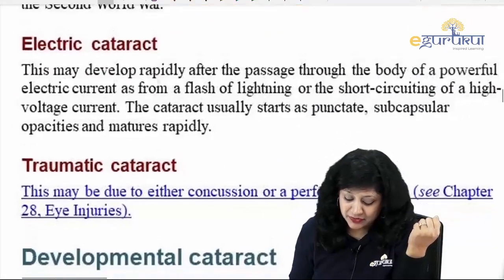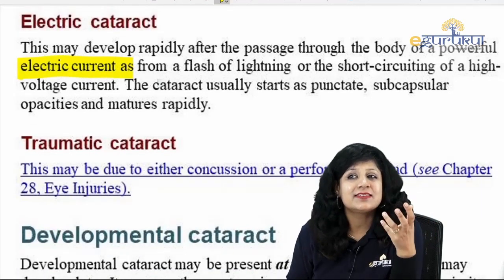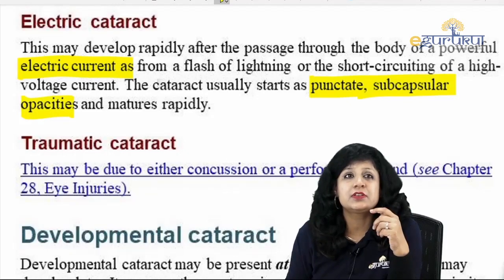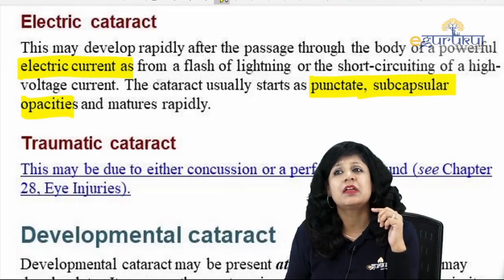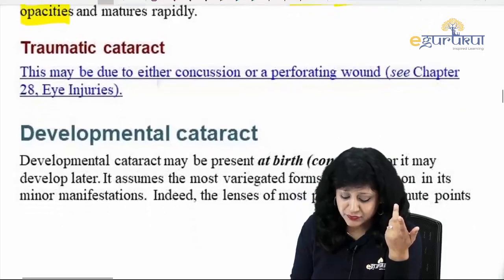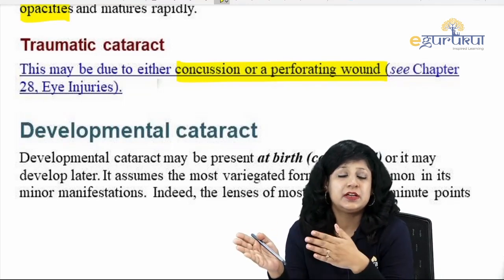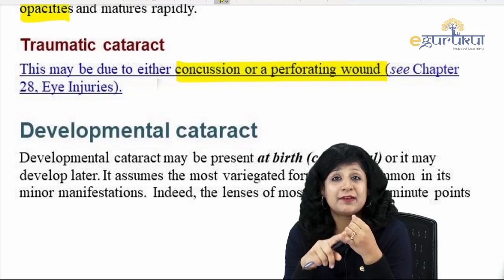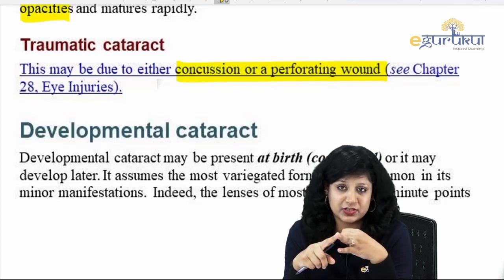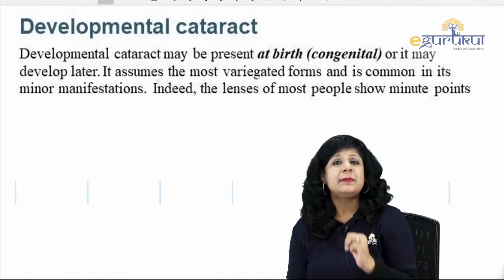Electric cataract may develop rapidly after passage of an electric current — it is mostly the punctate subcapsular type. Even a strong electric current can lead to cataract. Then we have traumatic cataract — it can be blunt trauma, perforating trauma, or penetrating trauma, all causing cataract. Questions for the comment section: what is the name of the cataract caused by blunt trauma, and what is the name caused by penetrating trauma?